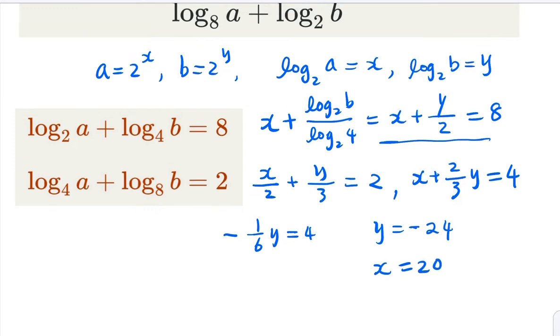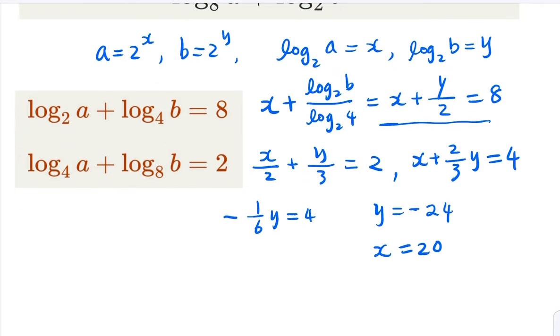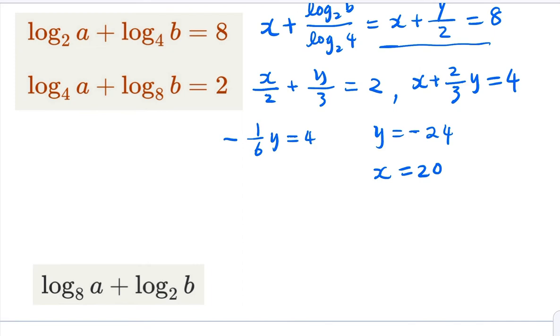Now, with that, you just plug in into this expression here again, use change of base. So what we have is, by using change of base, this is going to equal x over 3 plus y over 2. So what you get is 20 over 3 minus 12.